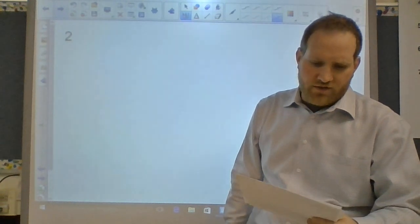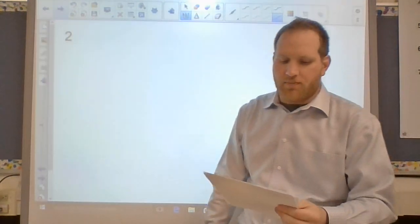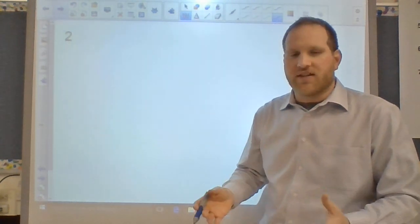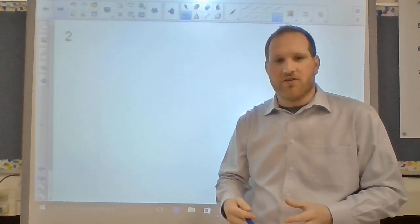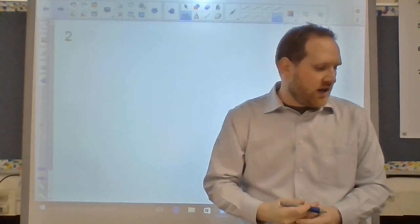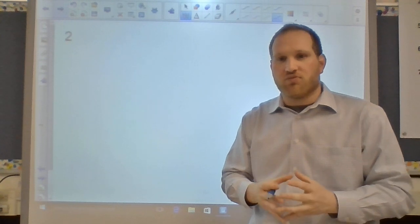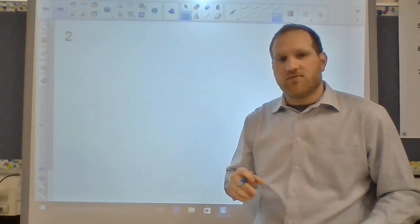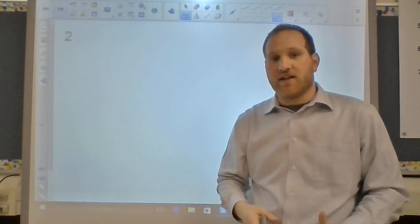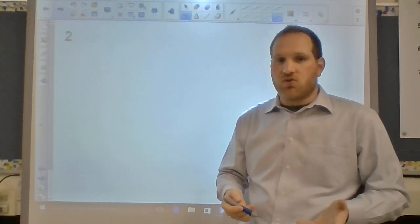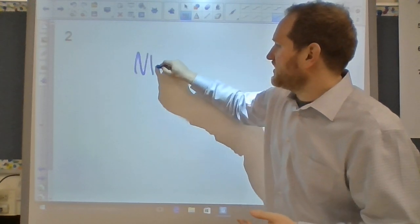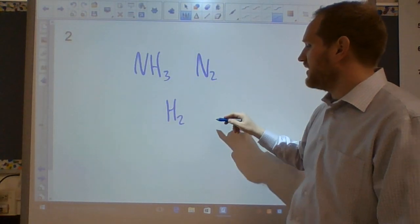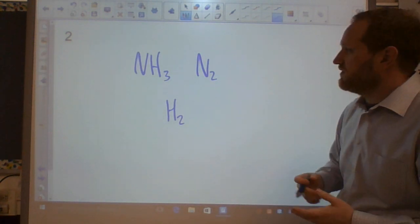Question two: define each of the following terms — atom, molecule, element, compound. An atom is basically the smallest unit of matter, the smallest sample that retains the original properties. It's comprised of protons, neutrons, and electrons. A molecule is any two or more atoms covalently bonded together — H2O, NH3, N2, H2 would all be molecules.